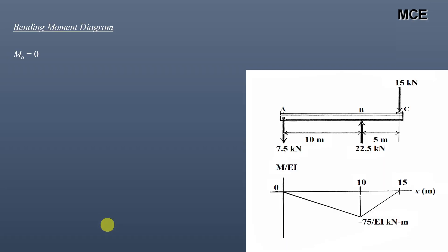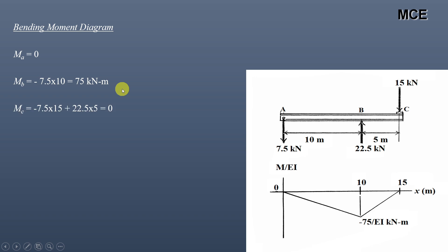After finding the vertical reactions, we draw the bending moment diagram. Moment at A is zero since it is a pin support. Moment at B equals minus 7.5 into 10, giving minus 75 kN·m. And Mc equals minus 7.5 into 15 plus 22.5 into 5, which equals zero. The M/EI diagram is obtained by dividing the bending moment diagram by EI, the flexural rigidity of the beam. Since EI is constant, divide each value by EI to get the M/EI diagram.